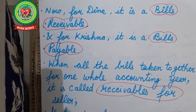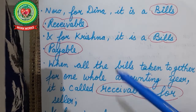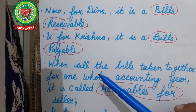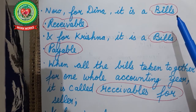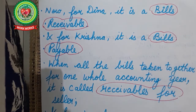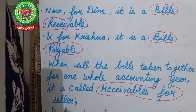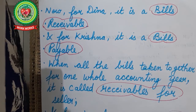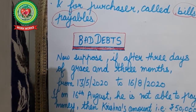Dina is the seller — for Dina it is a bill receivable, because he will receive the money after three months. For Krishna it is bills payable. Bills receivable is a document made by the seller for the amount to be received after a stipulated date. Bills payable is a document accepted by the purchaser in which he promises to pay the amount. When all bills are taken together for one accounting year, they are called receivables or payables respectively.